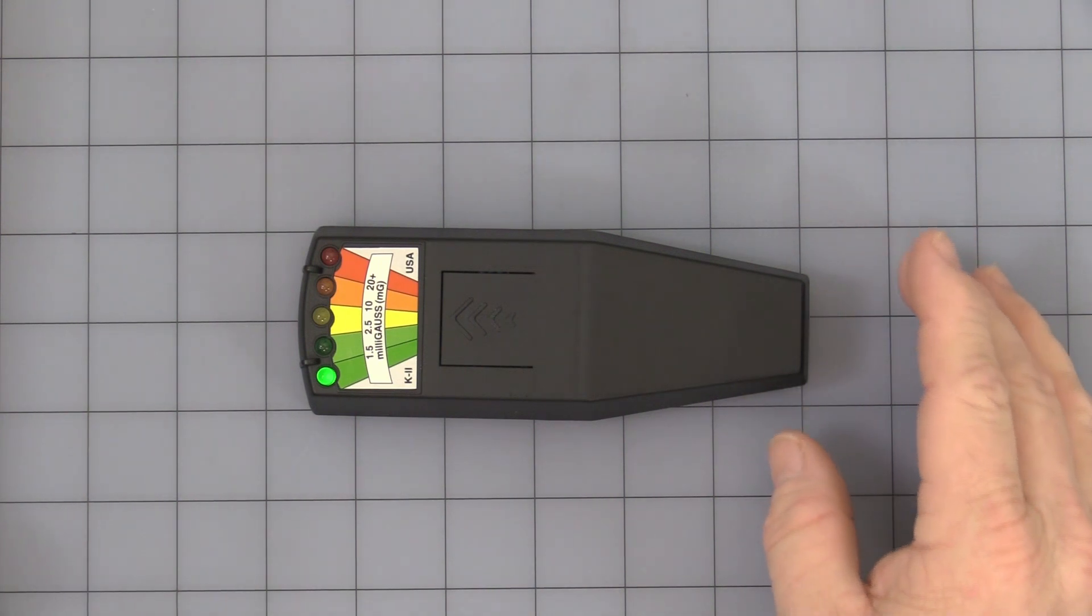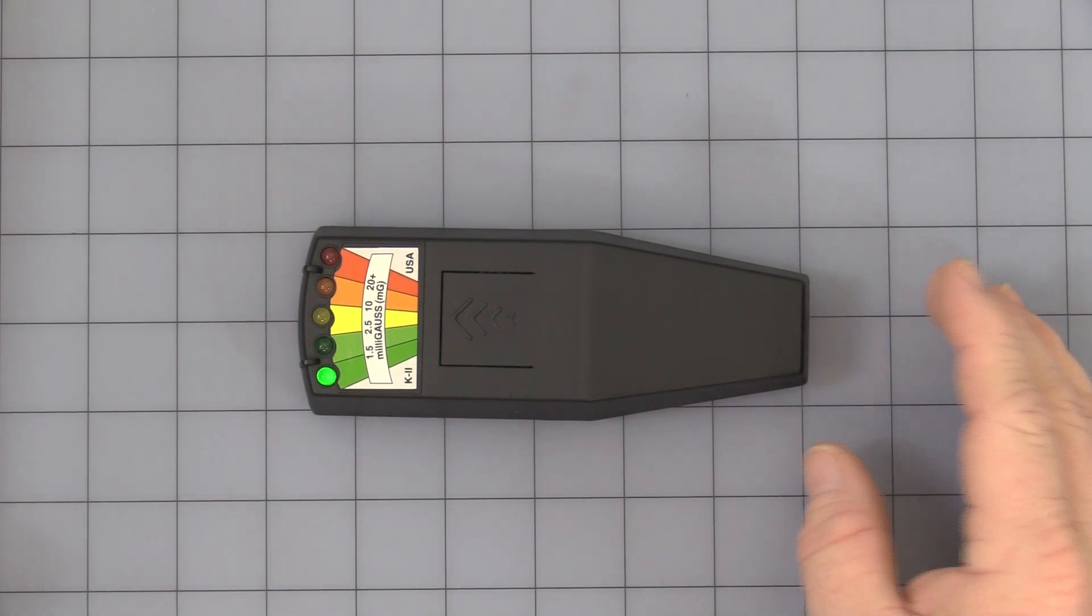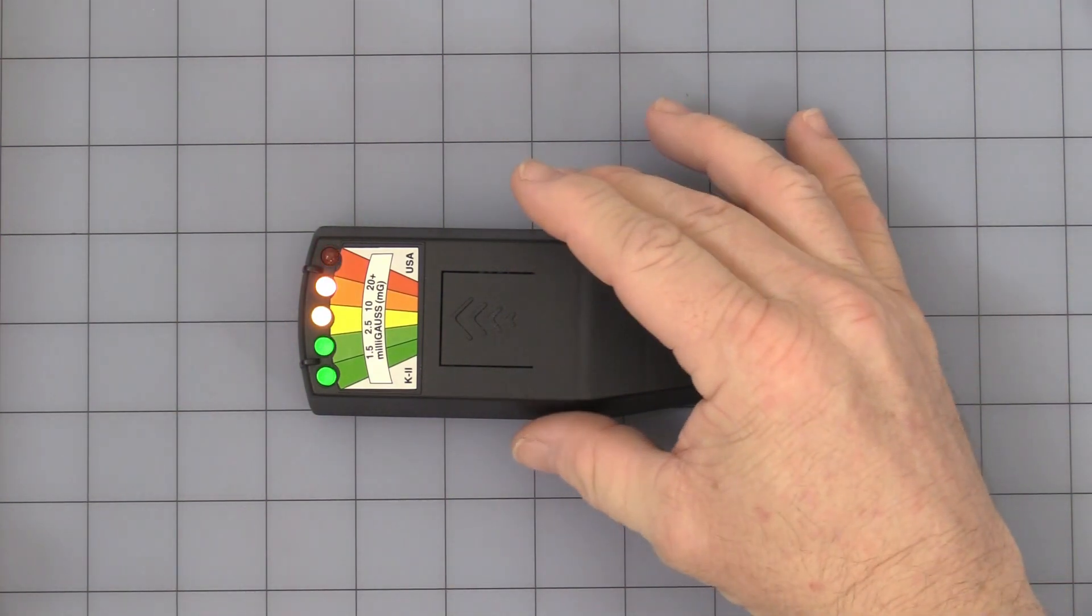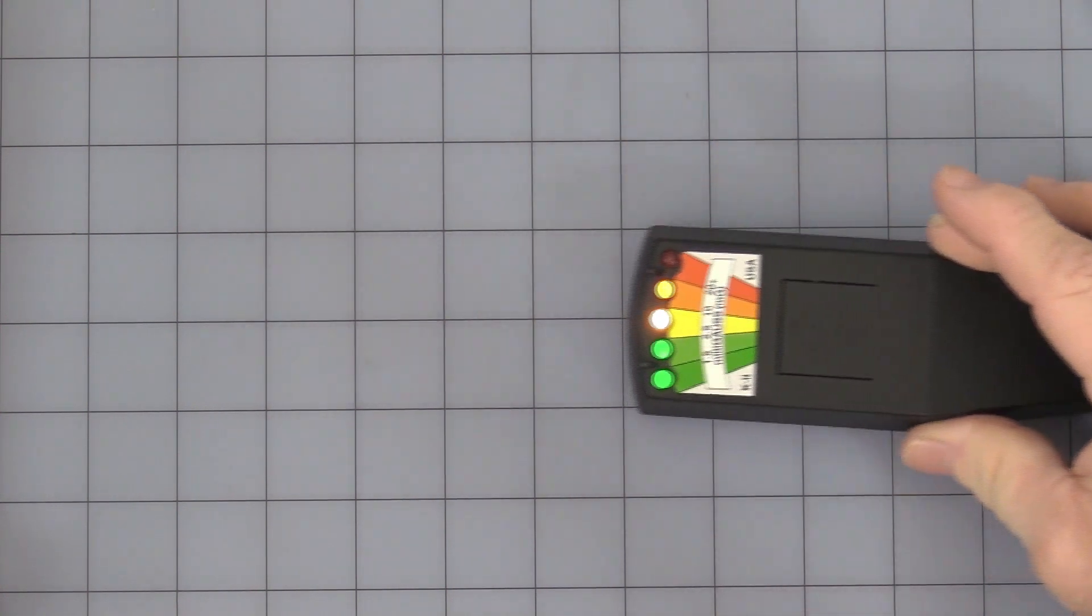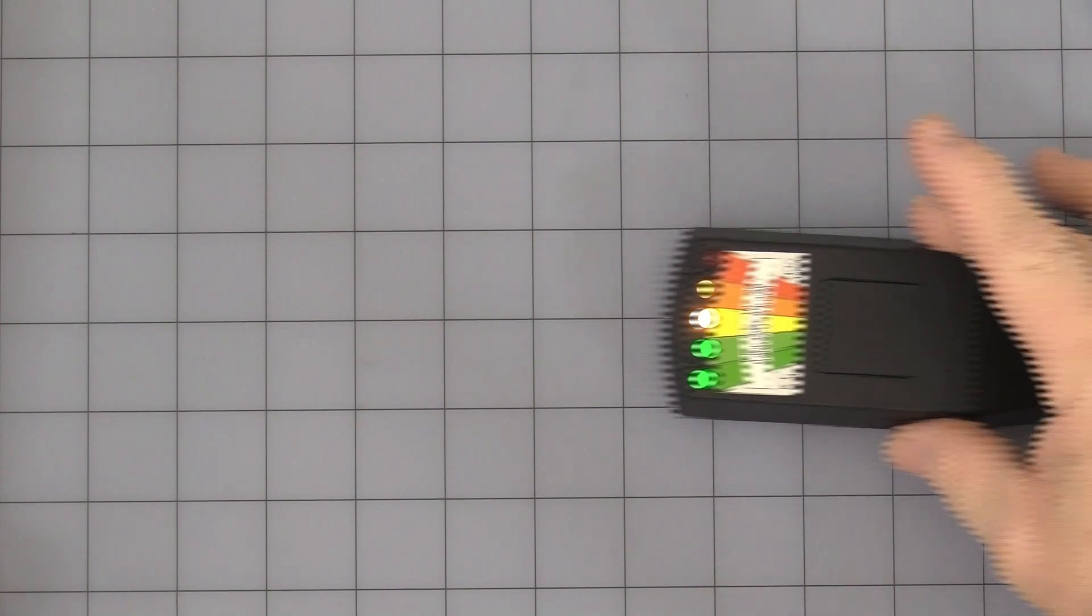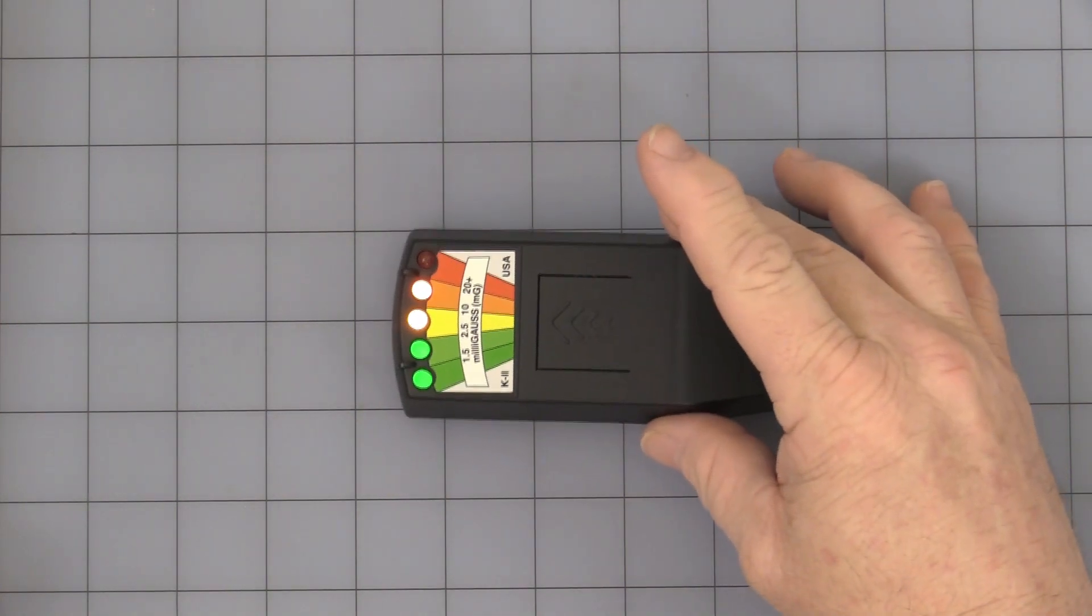Right off screen here I do have a big linear benchtop power supply. I'm going to turn that on. As you see, as it creates the magnetic field and as you move away, the field drops. It'll give you an idea of how far you need to be away to be in the safe zone.